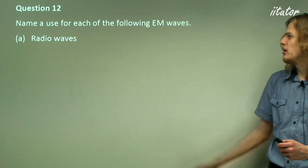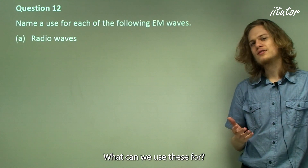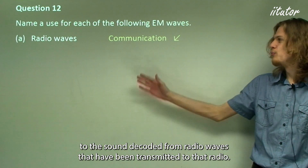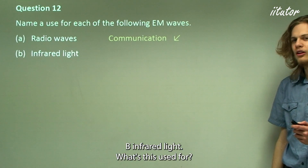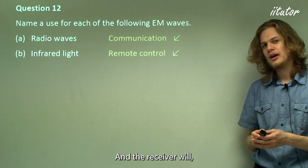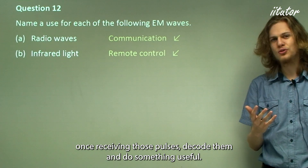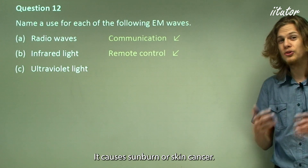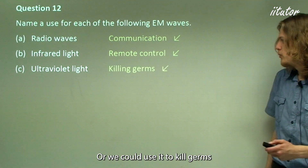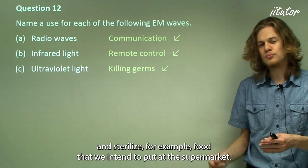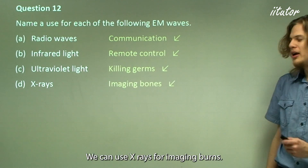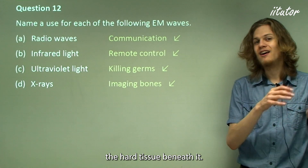Question 12: Name a use for each of the following electromagnetic waves. Radio waves — the name gives it away — we use them for communication; when we listen to a radio we're hearing sound decoded from transmitted radio waves. Infrared light: one useful application is a remote control, which sends pulses of infrared light to a receiver that decodes them. Ultraviolet light: we can use it to make materials fluoresce or glow, or to kill germs and sterilize food. X-rays: used in medical imaging — x-ray imagery lets us look through soft tissue to see the hard tissue, such as bones, beneath it.